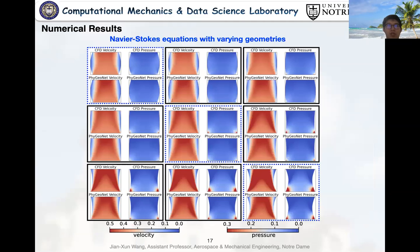In the third case, we use the PhyGeoNet to learn the Navier-Stokes equation with varying geometries. This time, the geometry is actually the input of the network. By varying the geometry from diverging-convergent channels to converging-divergent channels, all the flow solutions including velocity and pressure can be learned without any labeled data.